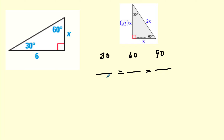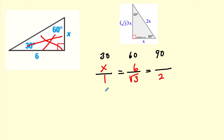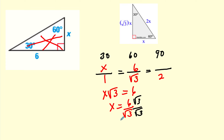Let's do it one more time. I'm going to write 1, √3, 2. Opposite the 30 I'm going to put x. Opposite the 60 is 6. We're not even asked to find y, so we don't have to worry about it. Cross multiplying: x√3 = 6, so x = 6 over √3. I'm going to times the numerator and denominator by √3 to rationalize. The answer will be 6√3 over 3, and when you reduce, it will be 2√3. That's all we were asked to do — find x.